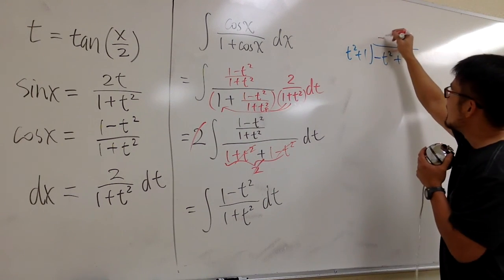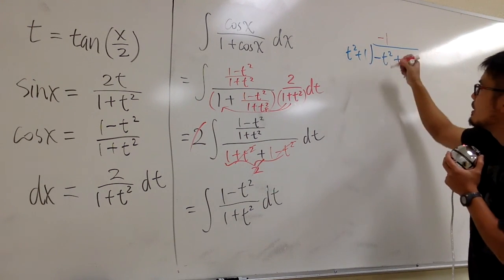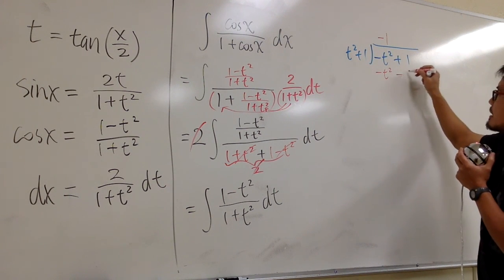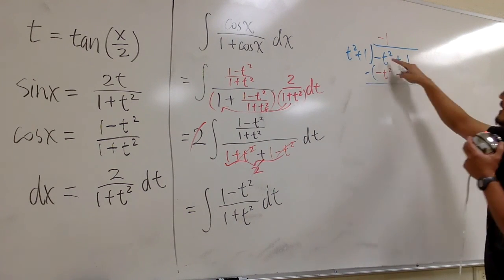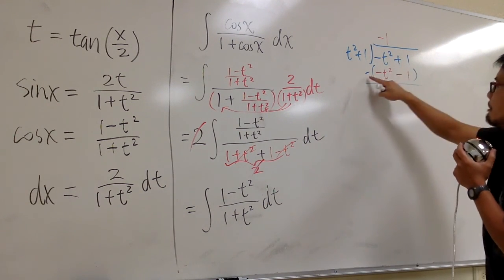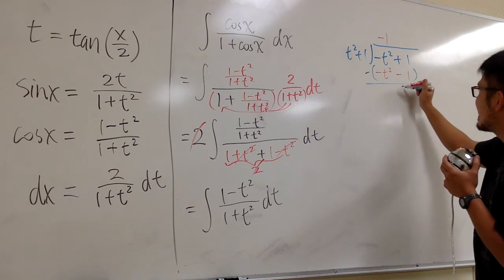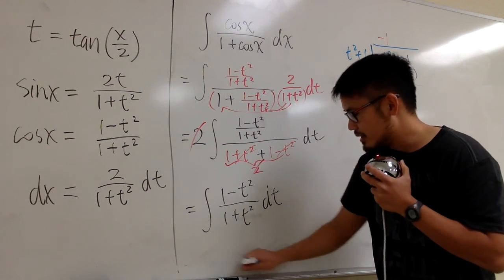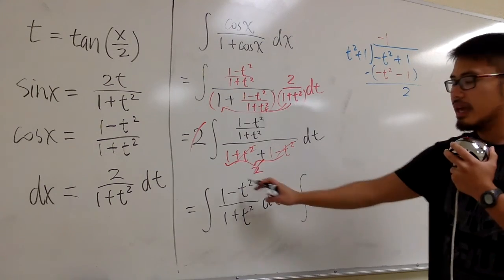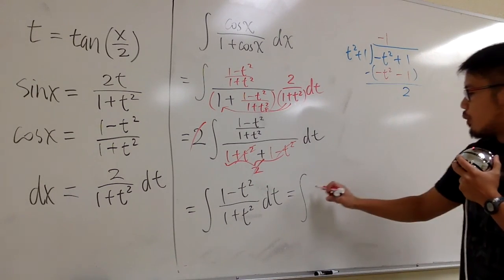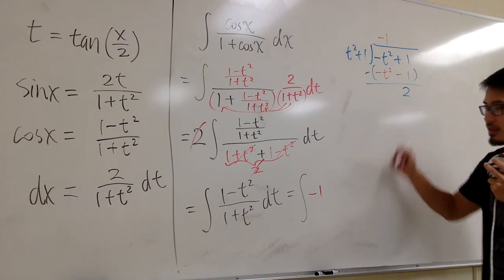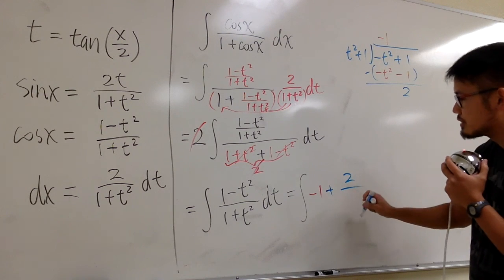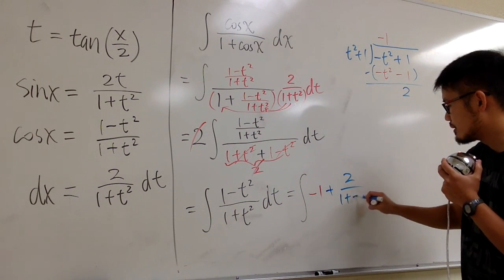What do we need? We need negative 1, because (−1) × t² gives us exactly −t², and (−1) × 1 gives −1. Don't forget, we subtract. Those terms cancel each other out. Then 1 minus (−1) gives positive 2. So inside here we are integrating: this is the same as the integral of −1 plus 2 over the original denominator, which is (1 + t²).